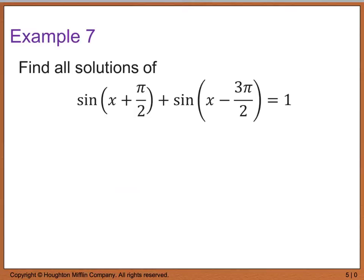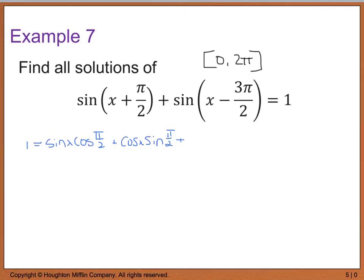Example 7 says to find all solutions of sine of the quantity x plus pi over 2 plus sine of x minus 3pi over 2 equals 1, on the interval from 0 to 2pi. We apply the appropriate sum and difference formulas. Moving the 1 over, we get: sine of x times cosine of pi over 2 plus cosine of x times sine of pi over 2, added to sine of x times cosine of 3pi over 2 minus cosine of x times sine of 3pi over 2.